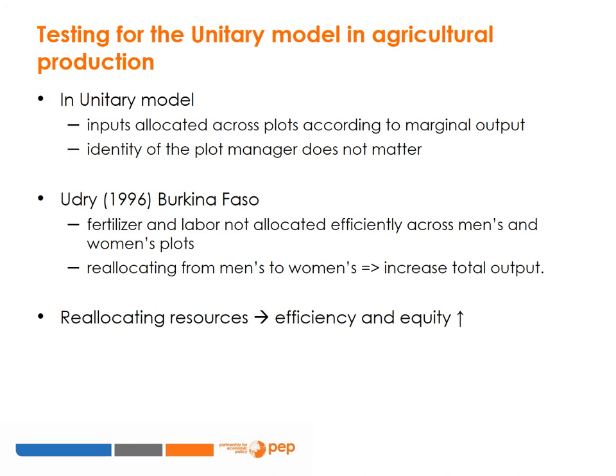We now look at a well-known study that tests for empirical evidence of the unitary model, cooperative behaviour and Pareto-optimality in agricultural production. In a unitary model of the household, agricultural inputs would be allocated across plots based on marginal output rather than on the identity of the household member controlling the plot. Udry 1996 finds that fertiliser and labour are not allocated efficiently across men's and women's plots in Burkina Faso. Reallocating from men's to women's plots would increase total output. This means that by reallocating resources, equity gains can be achieved without sacrificing efficiency, and it also indicates the absence of the unitary model in this scenario.